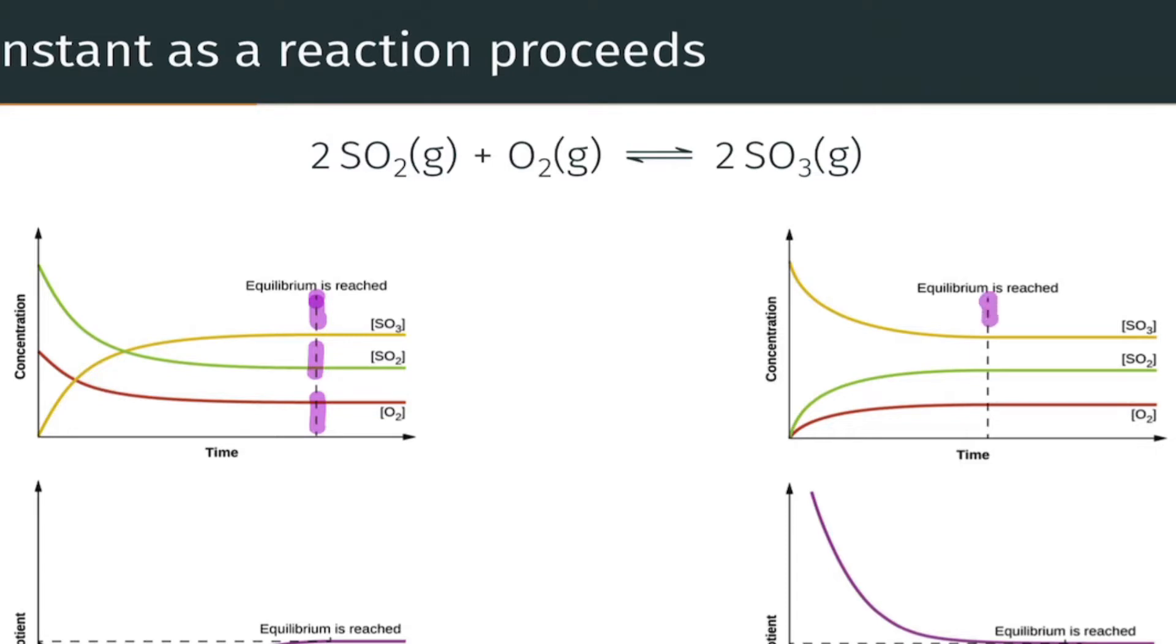And here we're starting in two different sets of initial conditions. Notice that where we're starting is somewhat different in these two sets of reaction conditions. The one on the right starts with pure SO3, the one on the left starts with SO2 and O2 and no SO3. And in fact we end up in very similar looking equilibrium situations. Notice that the equilibrium concentrations in both graphs look very similar.